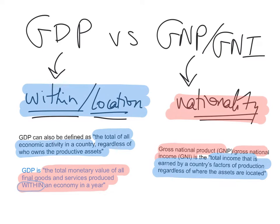So remember: GDP focuses on location — the location of economic activity. If it is within the borders of the country, it is calculated in the country's GDP. GNI focuses on the nationality and citizenship of this economic activity, regardless of where it is located.